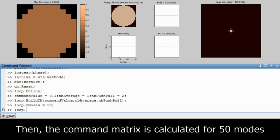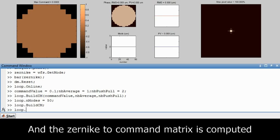Then the command matrix is calculated for the desired number of modes. And the Zernike to command matrix is also extracted from this.